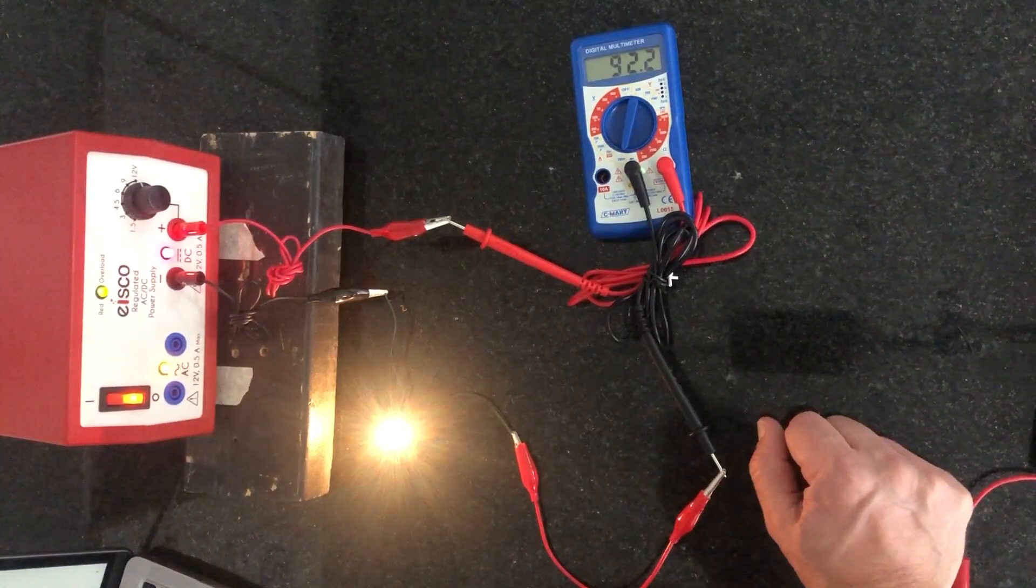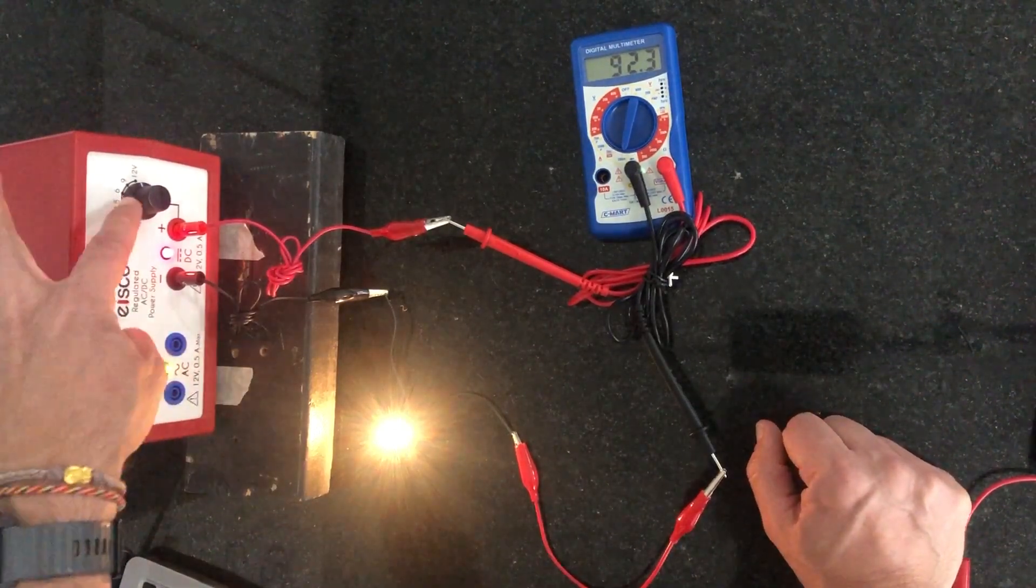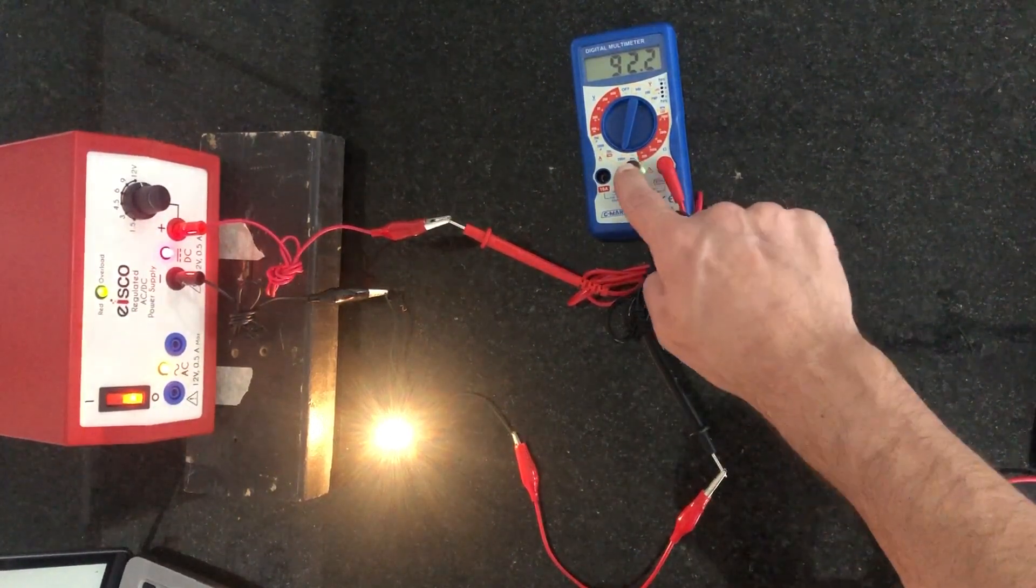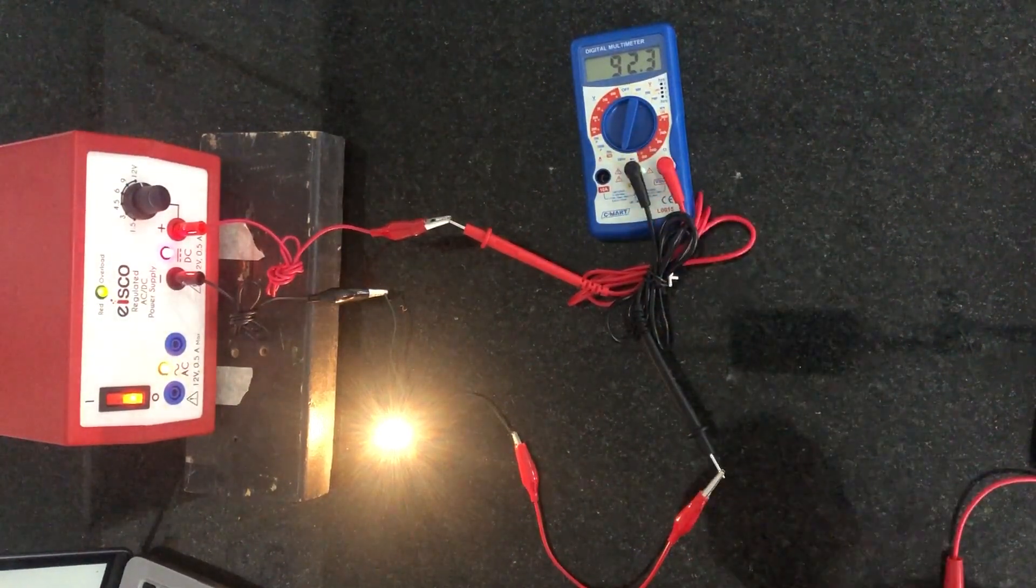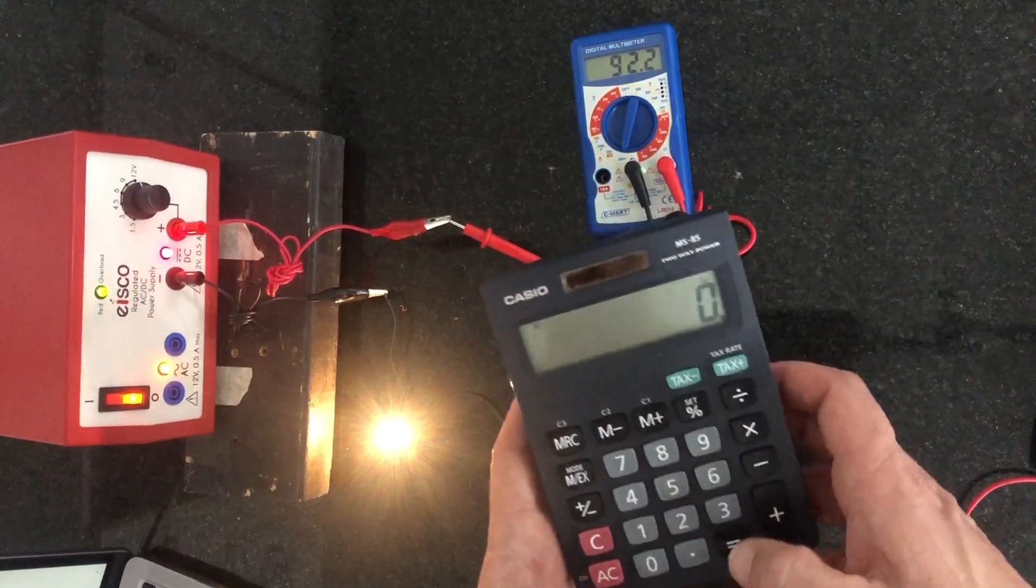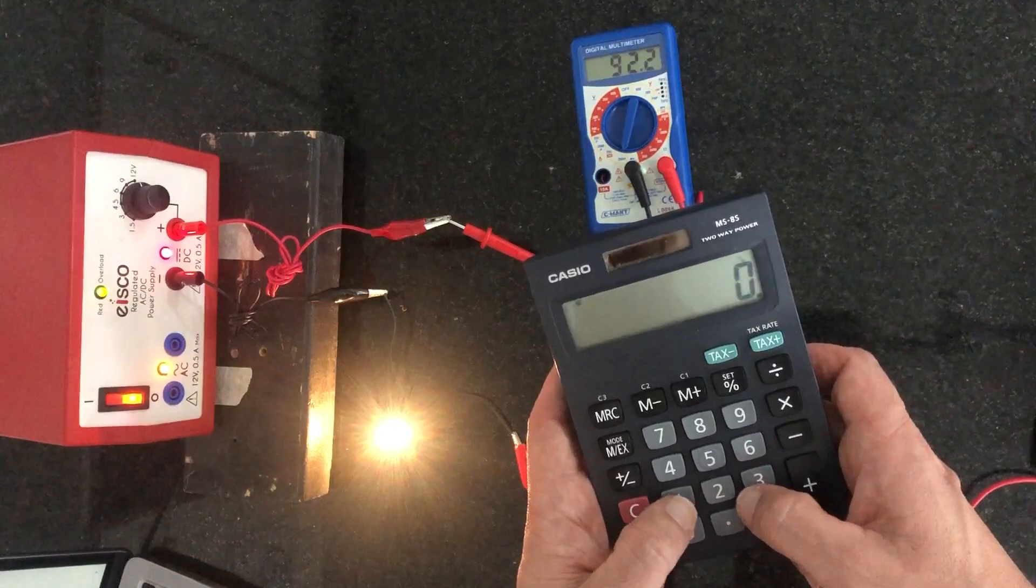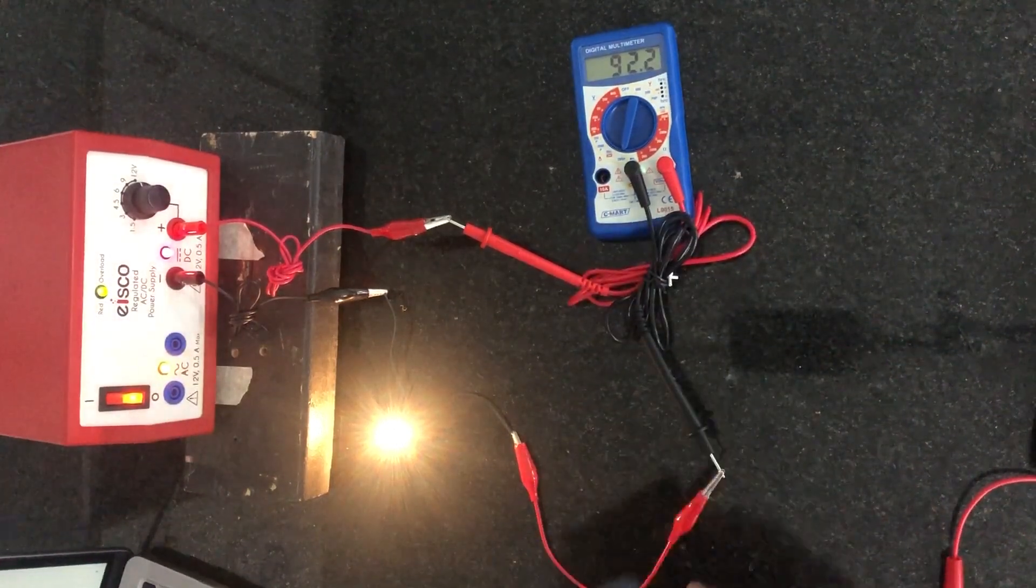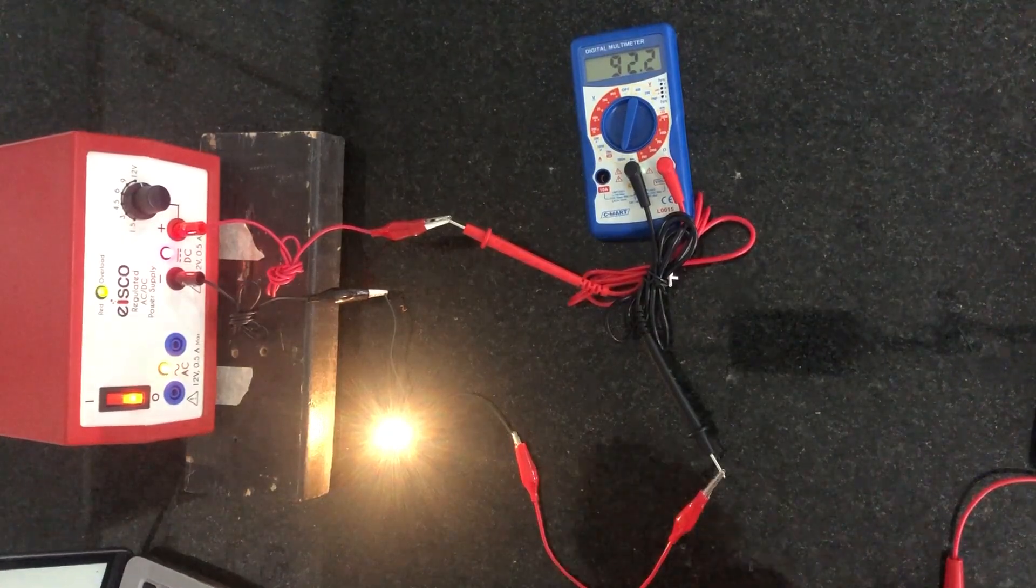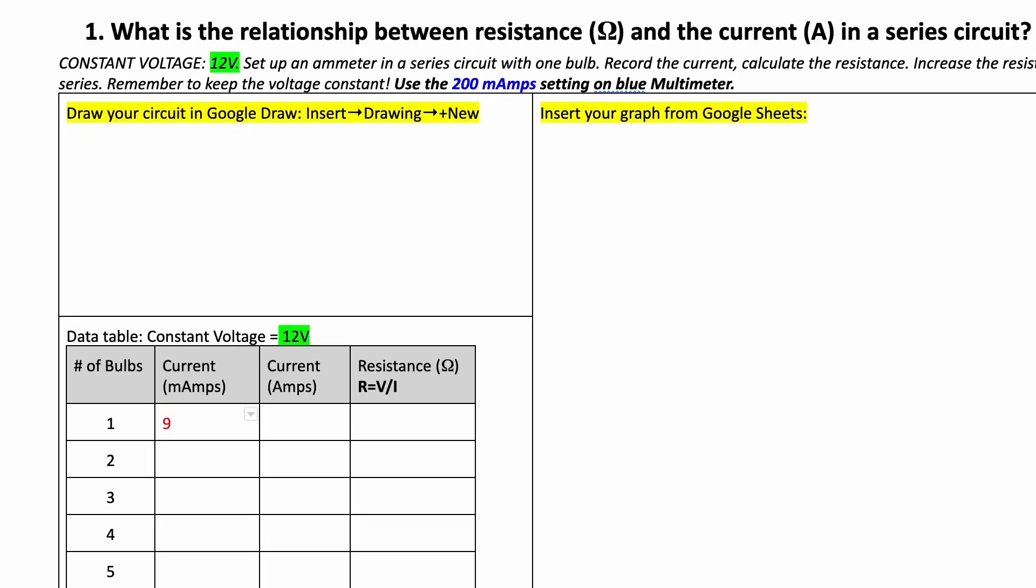Okay, so for this light bulb, the current that's going through it now with 12 volts is 92.2 and that's milliamps. So I have to change that to amps. So that is going to be, my voltage is 12. Let's see, let me go along with our table here. So the current in milliamps, I'm gonna write that in there, so 92.2.